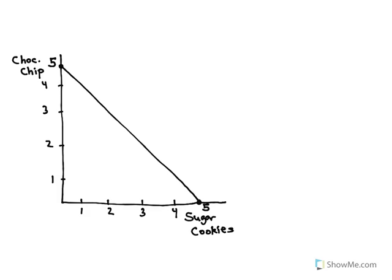So this is a production possibilities curve. It shows all the combinations of two goods in this case chocolate chip and sugar cookies that can be produced with a fixed amount of resources.